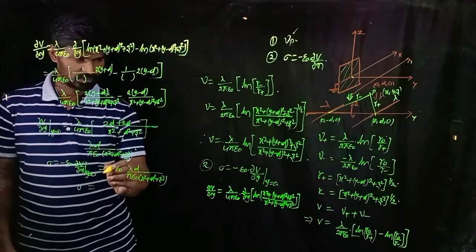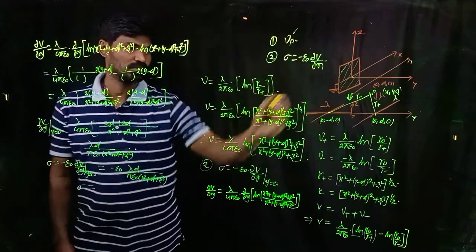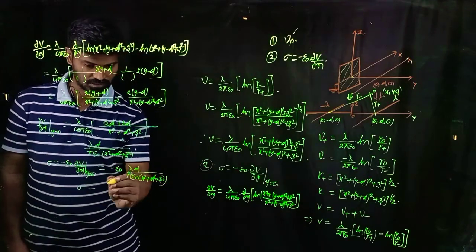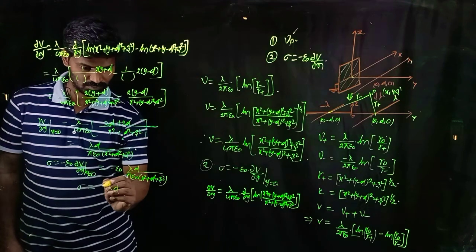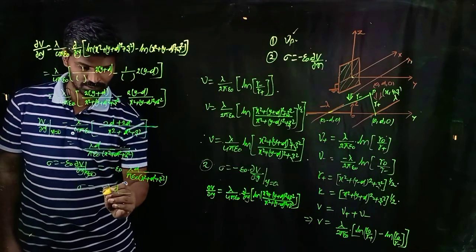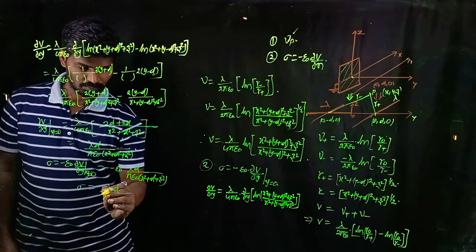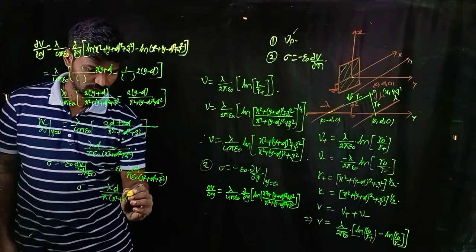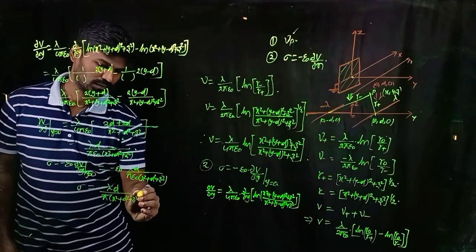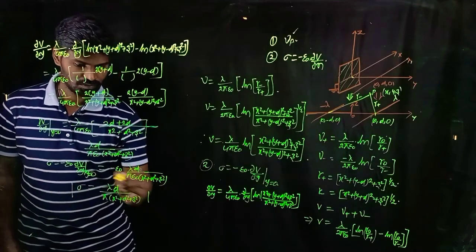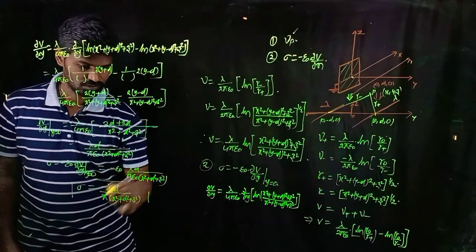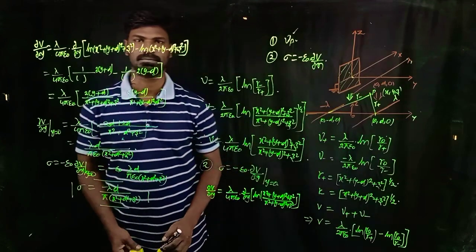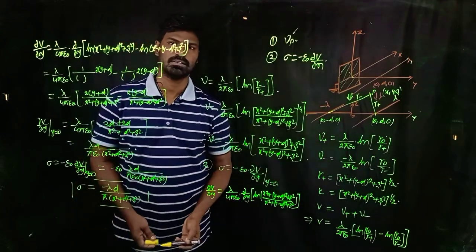Therefore, sigma = −ε₀ · ∂V/∂y at y = 0. The ε₀ cancels, and the induced surface charge density on the conductor is σ = −λd / (π(x² + d² + z²)). This is the final expression for the induced charge density on the grounded conducting plane.